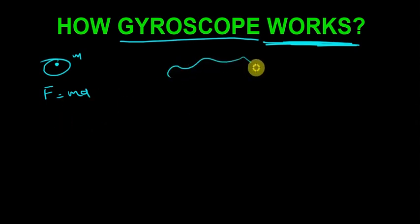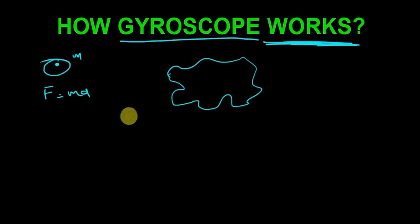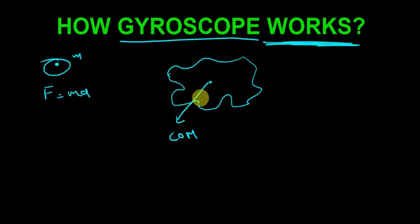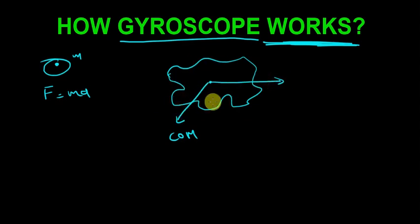For extended objects, we take a point called the center of mass, and we say the whole mass of the body is concentrated at that point. All forces acting on the body are applied at that single point, and with that we can make a free body diagram and analyze the motion.